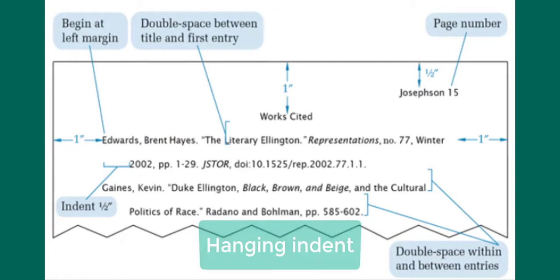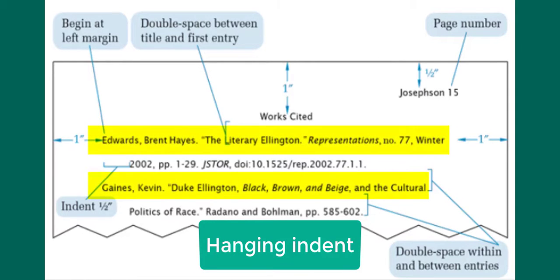Each citation has a hanging indent. This means that the first line of each citation starts at the left margin. If the reference continues onto additional lines, those lines are indented a half inch.